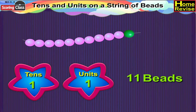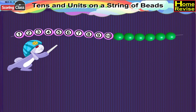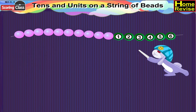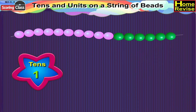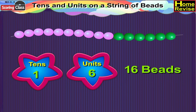In the next string, ten pink beads are there, along with six green beads, which means it is one ten, six units, or sixteen.